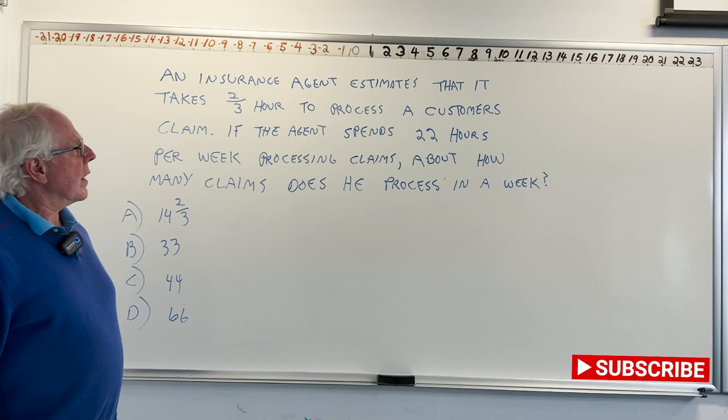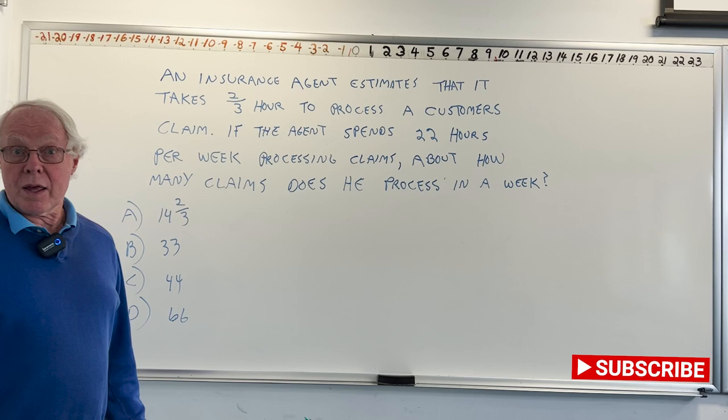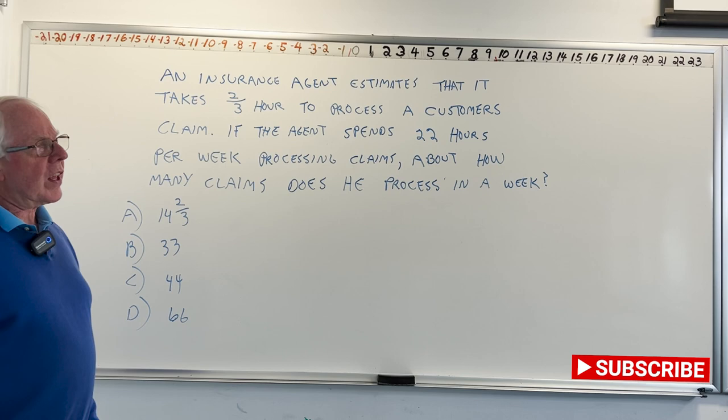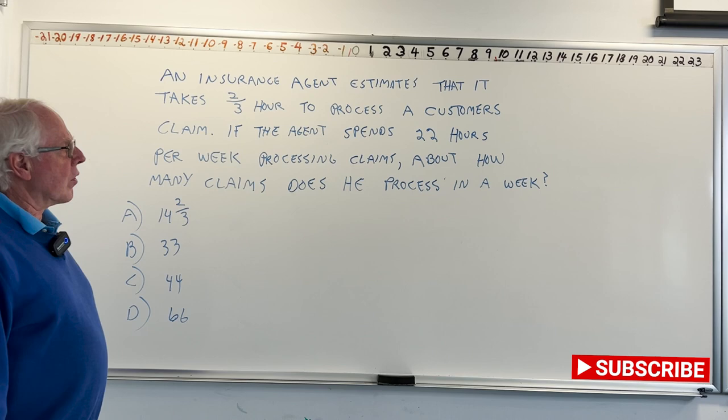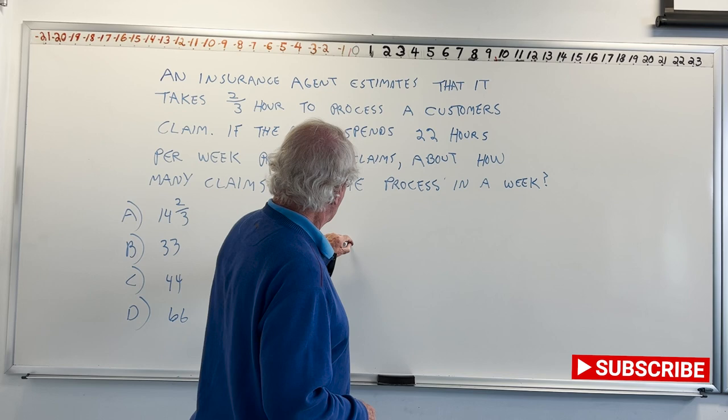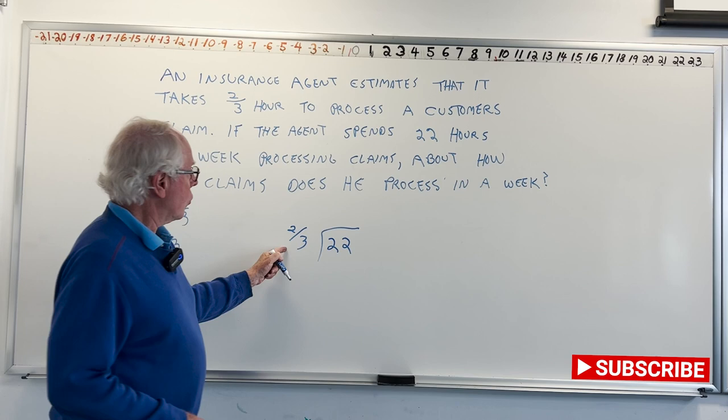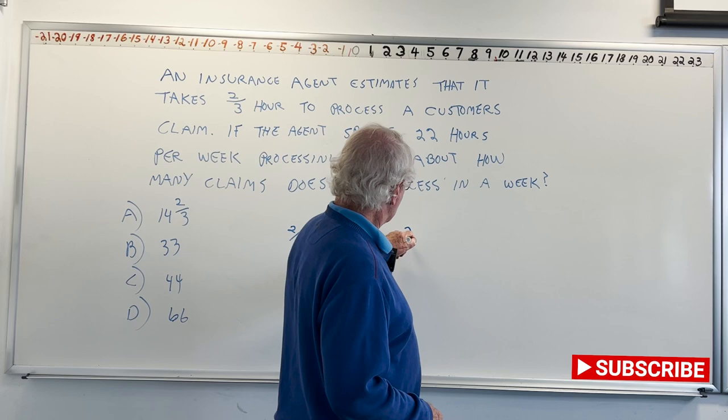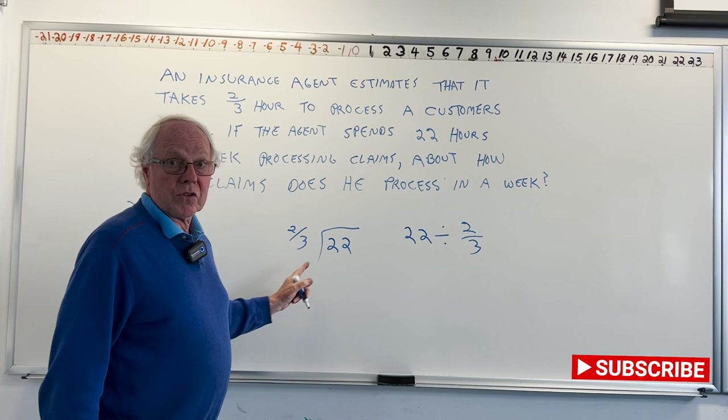If it took the guy an hour to do each claim, in 22 hours, he would do 22 claims. But this is saying that it only takes him 2/3 of an hour. So it takes him a little bit less than an hour. That makes me think that the answer is going to be more than 22. So that would make me rule this one out already. But we'll see. So the problem is going to be 22 hours. How many 2/3 are there in that 22? But that's not how we write it. We're going to say 22 divided by 2/3.